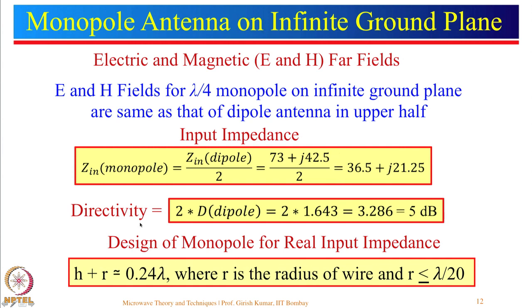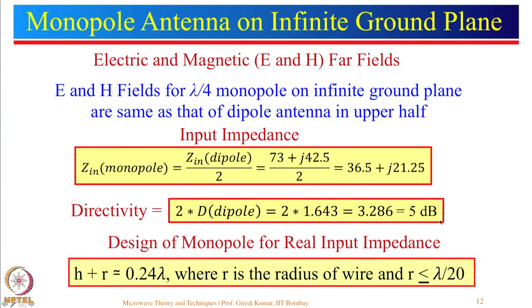For a monopole on an infinite ground plane: E and H fields are the same as a dipole but only in the upper half. Input impedance is half that of the dipole antenna. Directivity is double that of the dipole (approximately 5 dB), because radiation is confined to the upper hemisphere. The design equation is H plus R equals 0.24 lambda — directly from the dipole equation divided by 2 — where R is the wire radius, which must be less than lambda by 20.